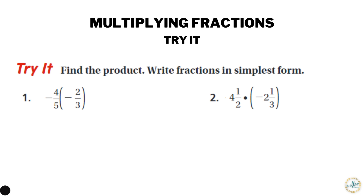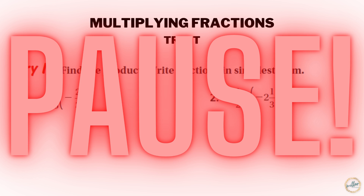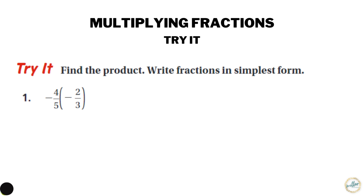Now you try it — find the product and write the fractions in simplest form. My recommendation is that you start by deciding what sign, positive or negative, your product is going to have, write that down, and then multiply your fractions. Pause the video and try them. Number one: both signs are negative, so our product will be positive — four-fifths times two-thirds.